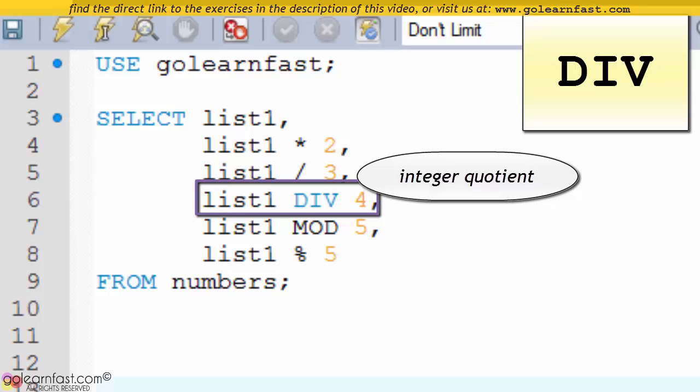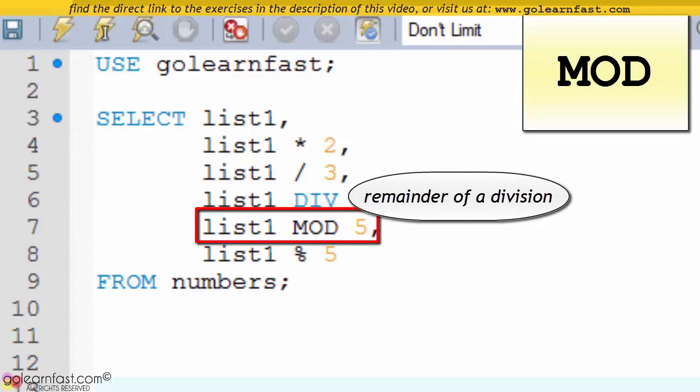Then the fourth column uses the DIV operator to return the integer quotient of the division between list1 and 4. The fifth column uses the modulo operator to return the remainder of the division between list1 and 5.